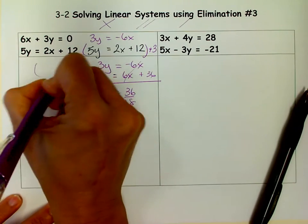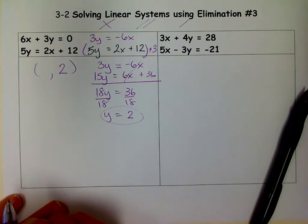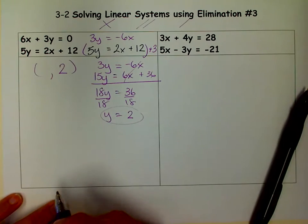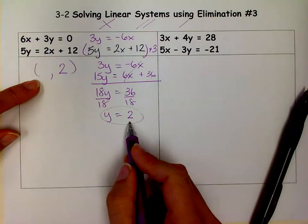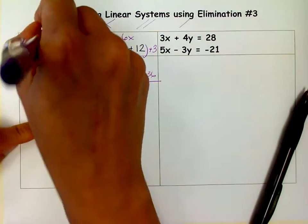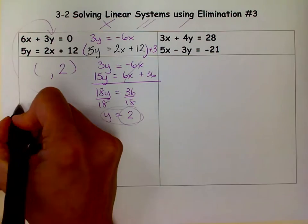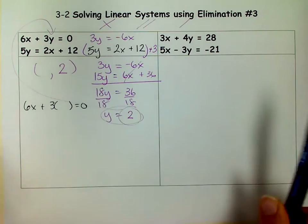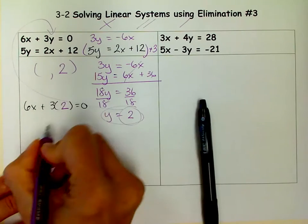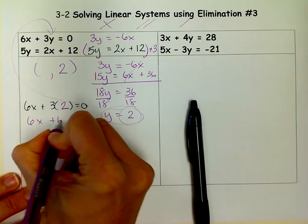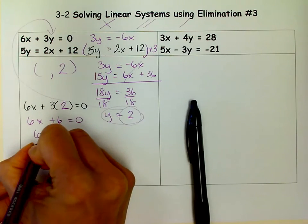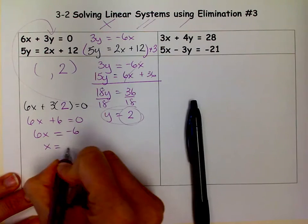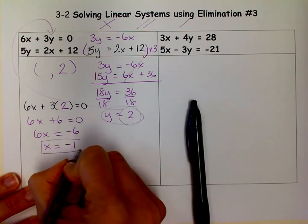Now that I have my Y I know half of my answer. And I know it's this one right here. It's going to intersect in exactly one place. And so now I need to find my X. So I take my Y and I plug it back in there. So I have 6X plus 3 times Y equals 0. I'm going to plug my 2 in. I'm going to get 6X plus 6 equals 0. When I minus 6 from both sides I get 6X equals negative 6. And when I divide both sides by 6 I get X equals negative 1.